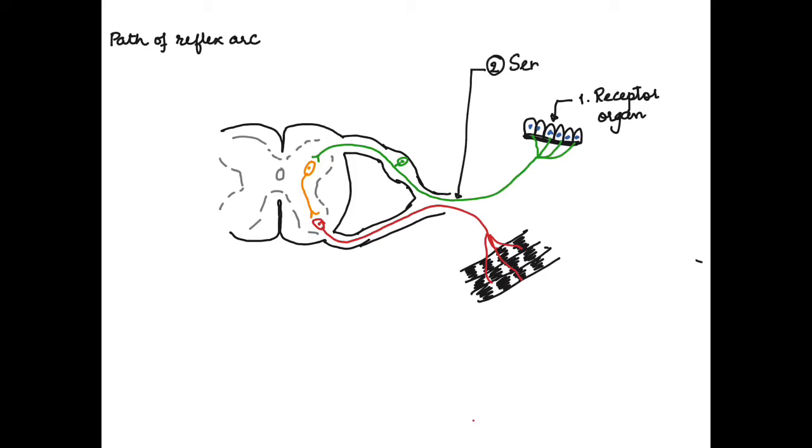The sensory neuron is the second component of the reflex arc. This sensory neuron carries the impulse to the spinal cord to the third component, that is the interneuron. The interneuron regulates or modulates the impulse received by the sensory neuron.